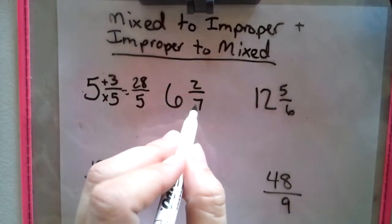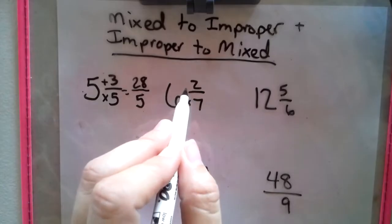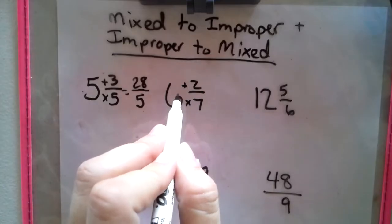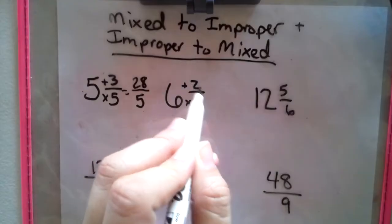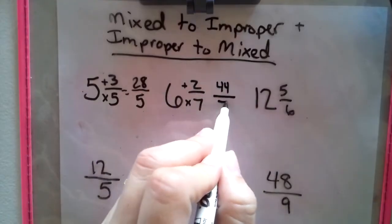So let's look at this one. Denominator multiplied by the whole number, add the numerator: 42, 43, 44, over the denominator originally given.